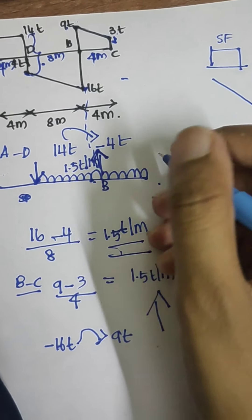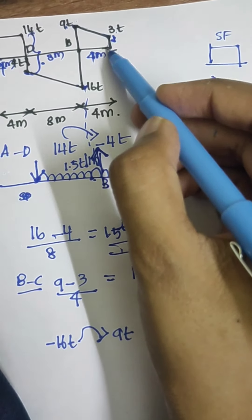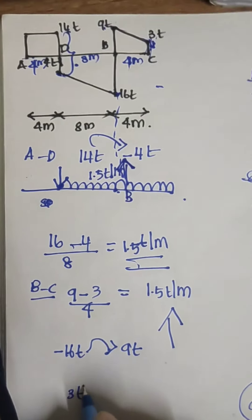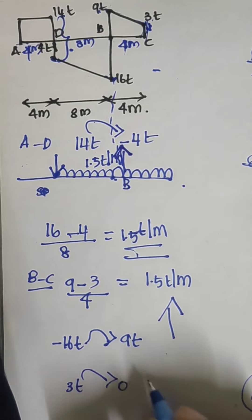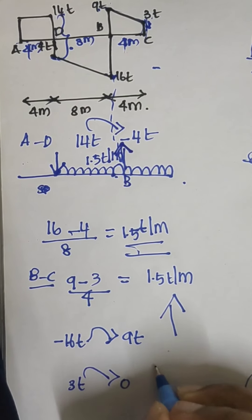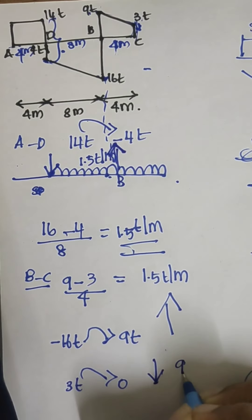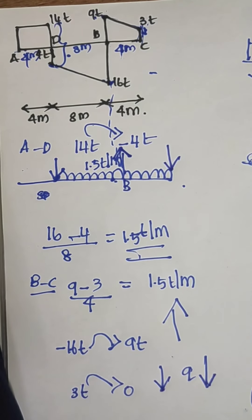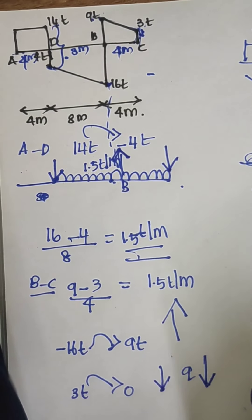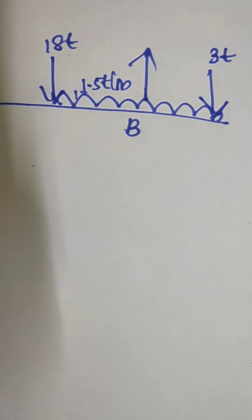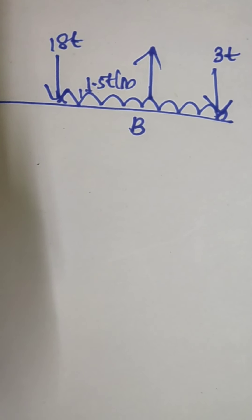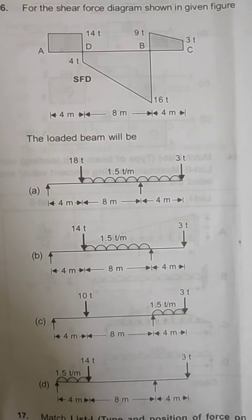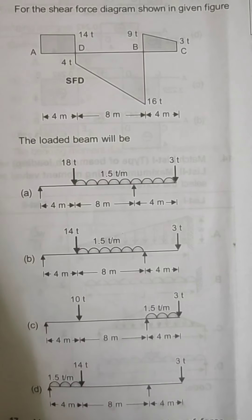At point C, there is a jump in the downward direction from 3t to 0. Since the jump is downward, the load is also in the downward direction. This is the final answer. Looking at the options given, the correct answer is option A.